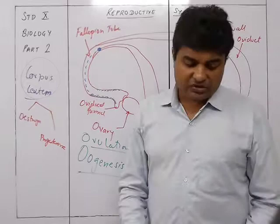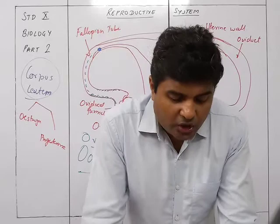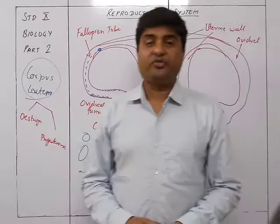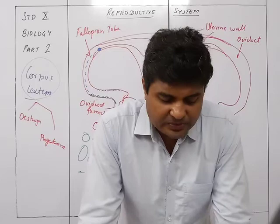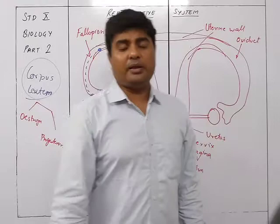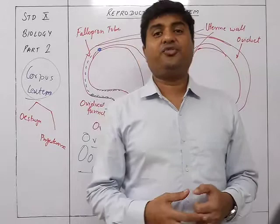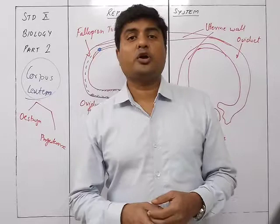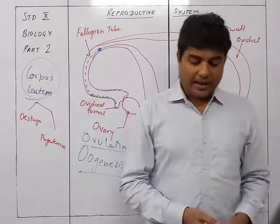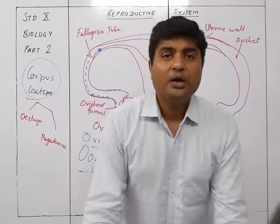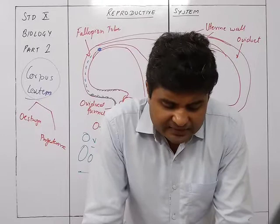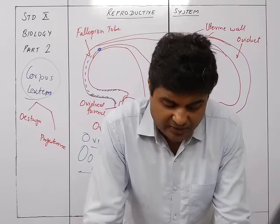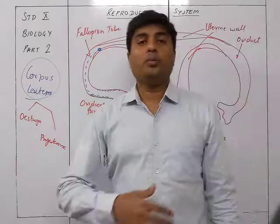The role of hormones in reproduction: the ovaries of a young girl start functioning around age 10 to 14 years, releasing ova — ovulation. This stage in her life is known as puberty. Around the same time as the first ovulation, the ovary also releases female sex hormones — estrogen and progesterone — into the bloodstream for the first time.